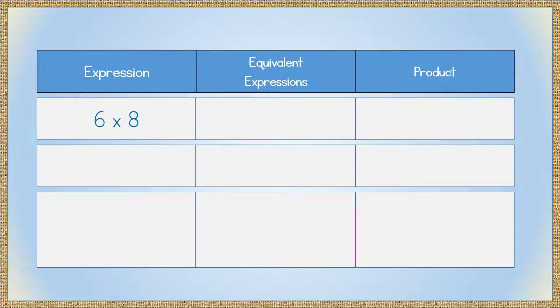6 times 8 is equivalent to 6 times 8 times 1, or 1 point 0. And it's also equivalent to 48 times 1, or 1 point 0. So, of course, the product would be 48, or 48 point 0. Let's take a look at another expression.